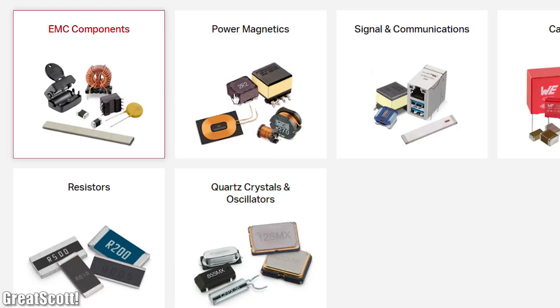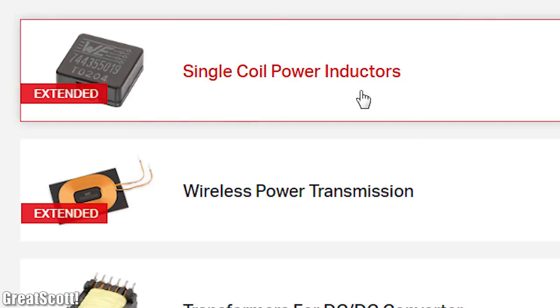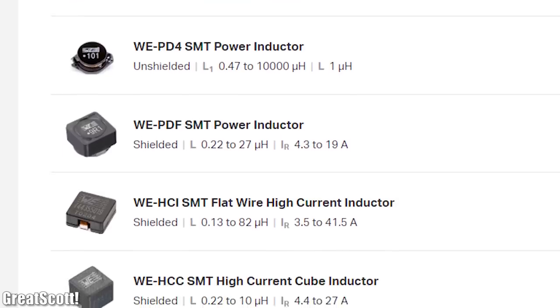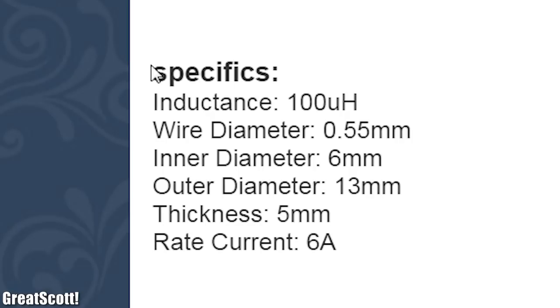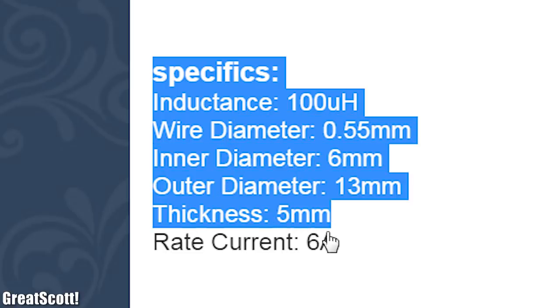Of course you can also visit the Würth Elektronik eiSos group website to get more information about coils or to order them, since they come with very detailed data sheets which for example eBay sellers do not offer in 99% of the cases.